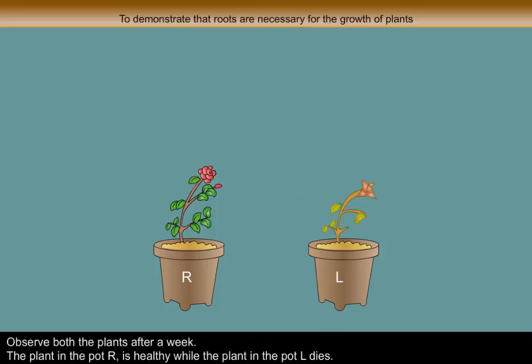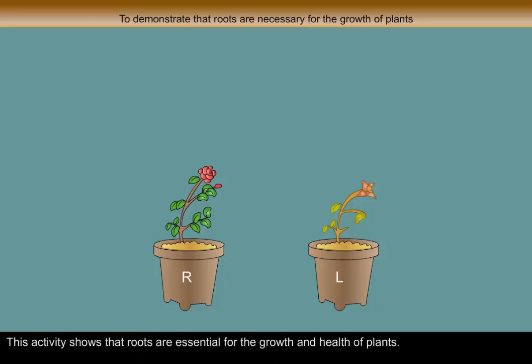Observe both the plants after a week. The plant in the pot R is healthy while the plant in the pot L dies. This activity shows that roots are essential for the growth and health of plants.